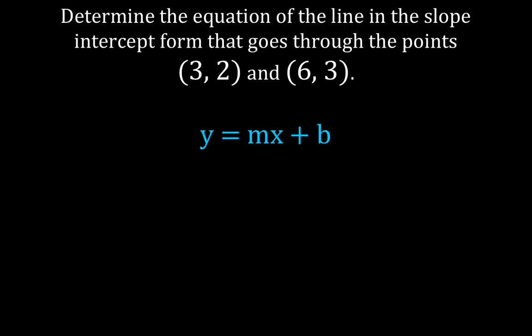The slope-intercept form is y equals mx plus b, and in order to write the equation for the line we need an m and we need a b. We just have two points: (3, 2) and (6, 3). We can calculate m and b — the first thing we're going to do is calculate m. M is the slope and b is the y-intercept.